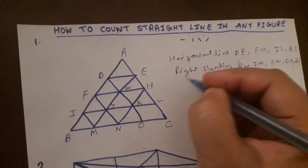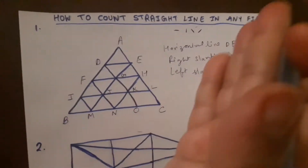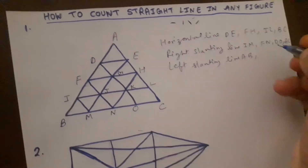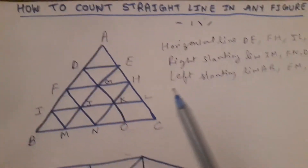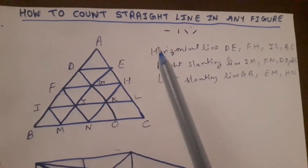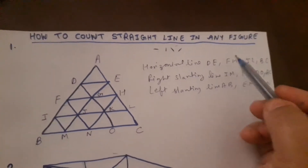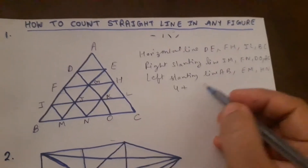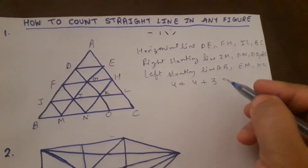After that we have to count the left slanting lines. Left slanting lines go like this. You can see here there are 3 left slanting lines. The names are A B, E M, and H N. Now all four steps are completed. So now add the numbers: 4 horizontal lines, 4 right slanting lines, and 3 left slanting lines. So 4 plus 4 equals 8, and 8 plus 3 equals 11.